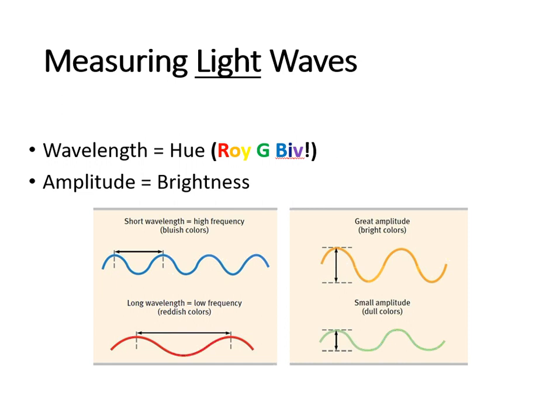As far as the amplitude itself, the greater the amplitude for a light wave, the brighter that color is going to be. And if you have a small amplitude or smaller intensity, then it's going to be a little bit duller with the colors.